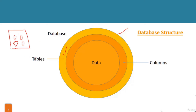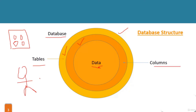Inside each table we have columns. For example, if 'Student' is a table name, inside it I can have columns like student name and student roll number. So this inner level is called columns, columns are inside tables, and the outer shell of tables is called the database. The most core element of the database is the actual data.